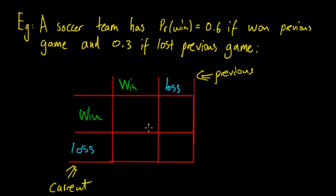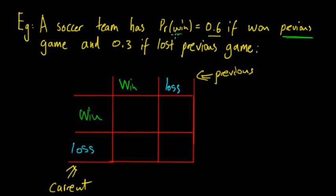In these four sections, you put in the probabilities. The probability of winning when you've previously won is 0.6 - we get that because it's 0.6 if you've won previously, so winning previously and winning currently is 0.6. If they've won previously, the chance of losing is 1 minus 0.6, which gives 0.4.